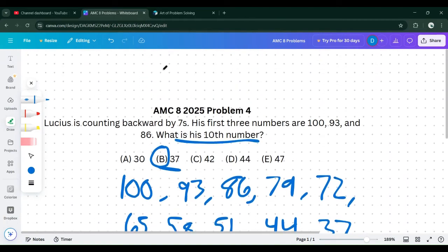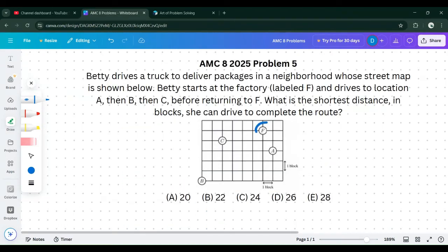Now we're going to move on to the final problem for this video, problem 5. She starts at F and she's trying to find the shortest distance. She first drives to location A. The shortest distance from F to A is three blocks. We're trying to find the most efficient route. The most efficient is just going down two and right one for a total of three blocks.